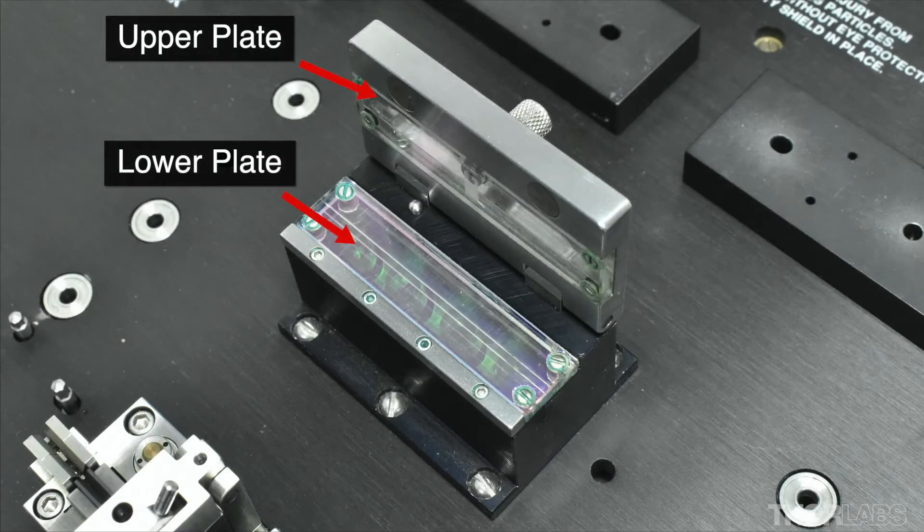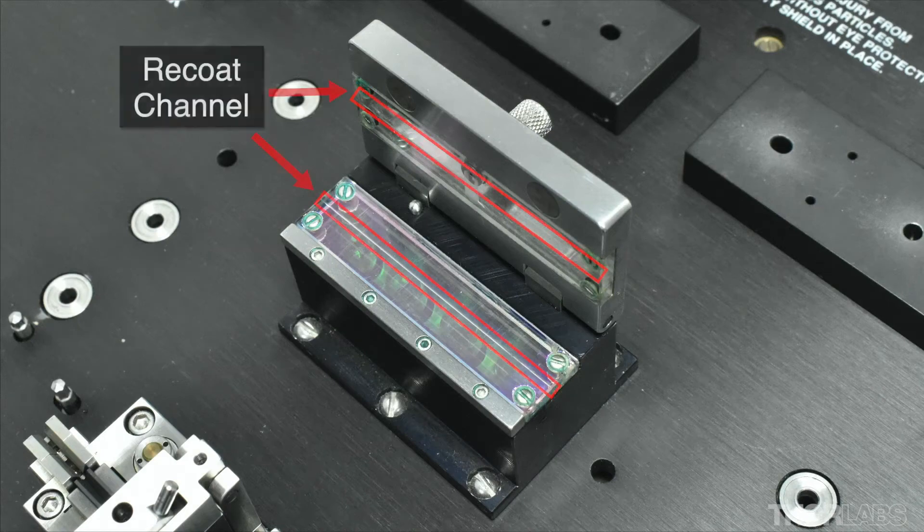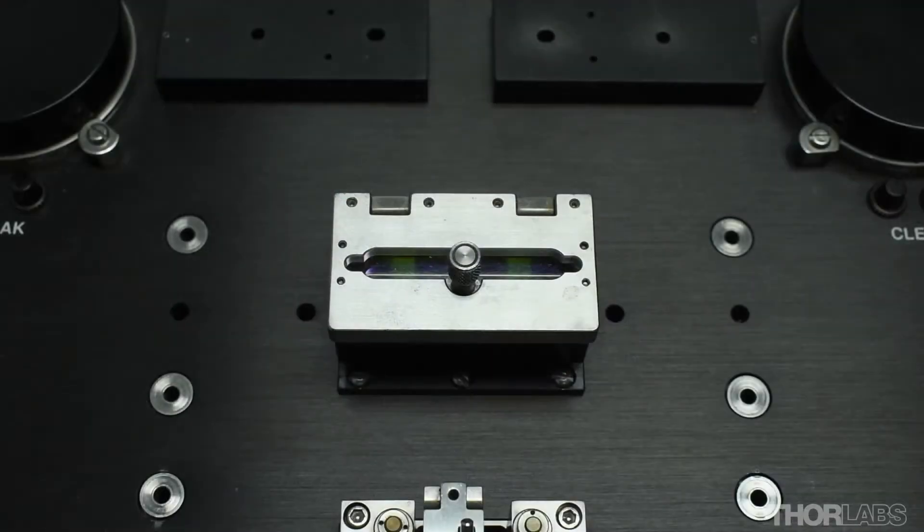The recoat mold consists of two very flat quartz glass plates. There is a semicircular channel in both the upper and lower plates. When the lid is closed and the plates come together, these channels form a mold cavity of the required recoat diameter.